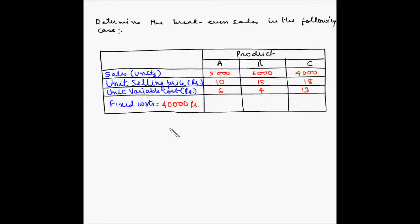Let us look at an example of cost-volume-profit analysis where a company has multiple products. We need to determine the break-even sales in the following case. Break-even sales means the sales in terms of revenues at which the entire cost has been recovered. This company has three products A, B, and C. We have been given sales in terms of units which is 5,000, 6,000, and 4,000 respectively.